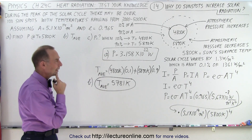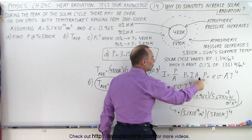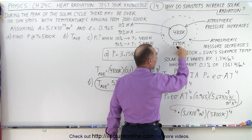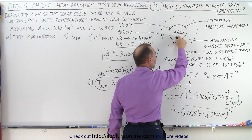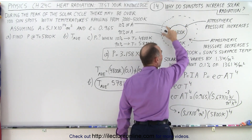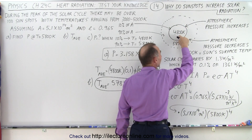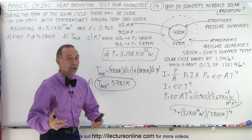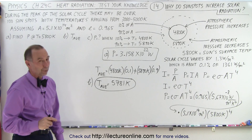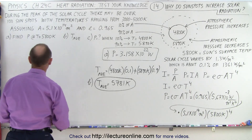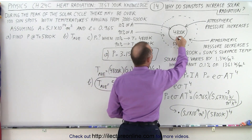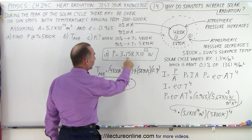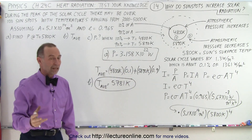So you might think: if the average temperature is less, why would you get more energy from that region? That's because the power from the Sun is a function of temperature to the fourth power. The small increase in temperature around the sunspot, when raised to the fourth power, has a much greater effect than the large temperature decrease where the sunspot is. That's why during high solar activity we get more energy — and we'll calculate that now.